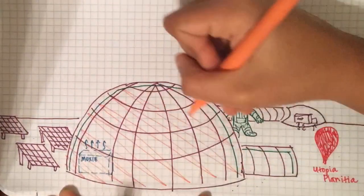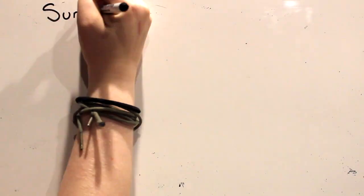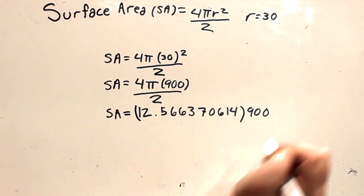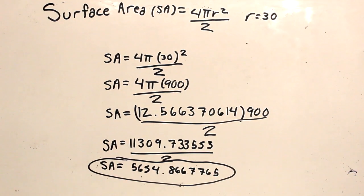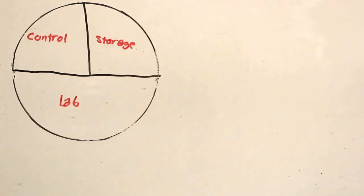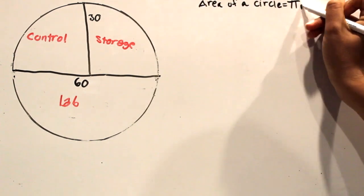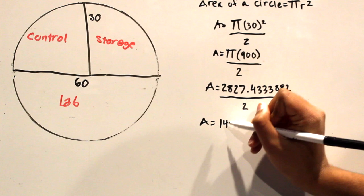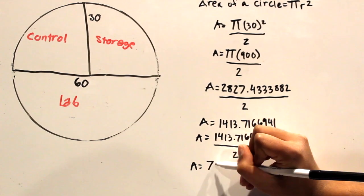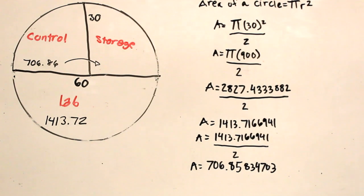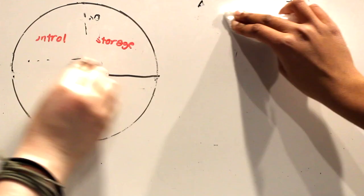After going through many drafts of the house, we determined that the total surface area of the dome is about 5,655 feet. We figured this out by finding the surface area of the sphere and dividing by 2. The first floor of our dome has a diameter of 60 feet and contains a control room, a lab, and some storage space. The lab has a total area of about 1,414 feet, and the control and storage rooms have about 707 feet.